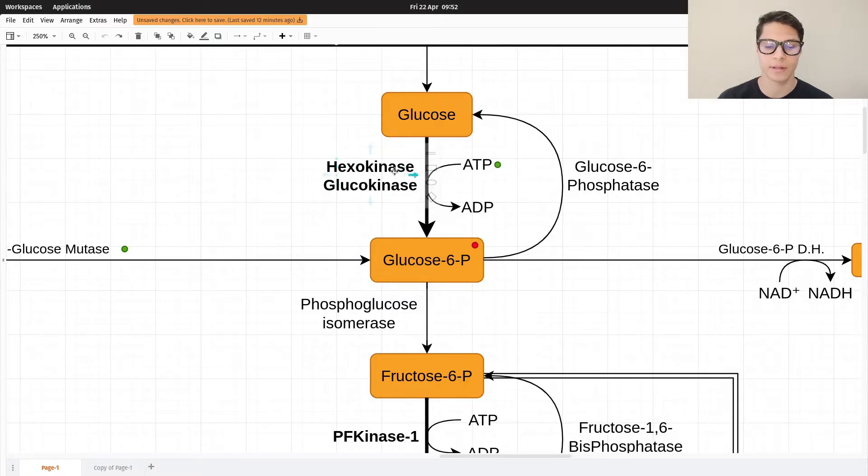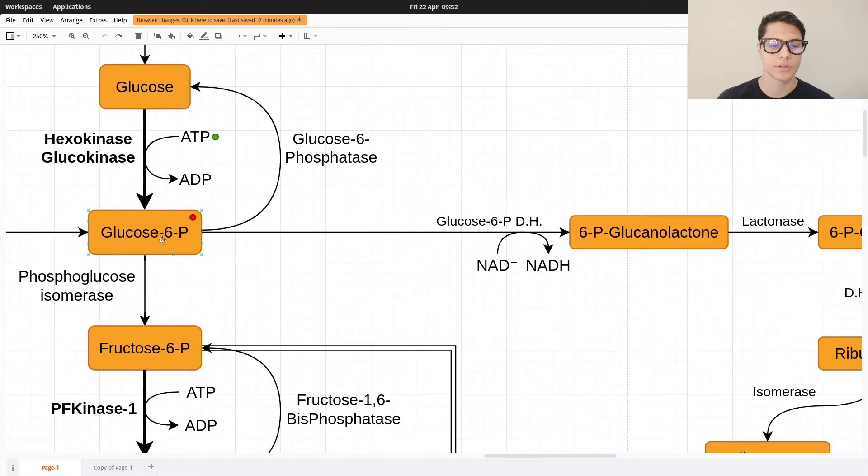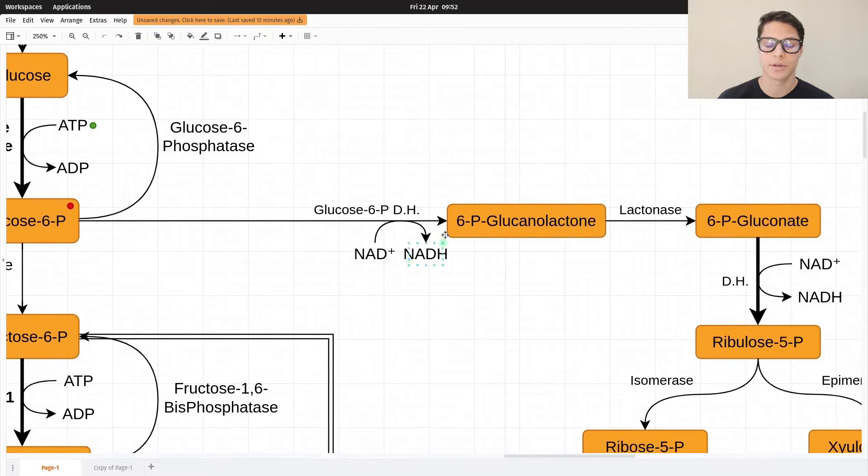Kinase means phosphate, so 6-phosphate. Then glucose 6-phosphate is converted into 6-phosphogluconolactone via glucose 6-phosphate dehydrogenase, and every time you hear dehydrogenase, it means NAD+ to NADH.